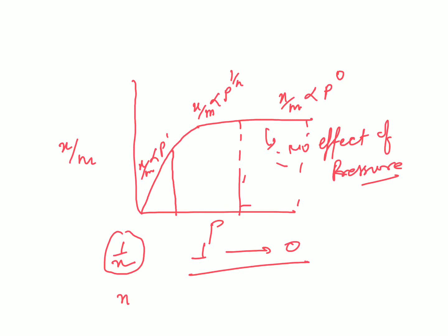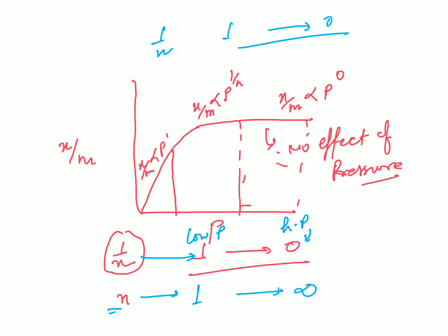This is very important for competitive examinations. The value of 1/n in the Freundlich isotherm varies from 1 to 0. Correspondingly, the value of n varies from 1 to infinity. At low pressure, 1/n = 1 (n = 1); at high pressure, 1/n = 0 (n = infinity). So the value of n ranges from 1 to infinity, and the value of 1/n ranges from 1 to 0.